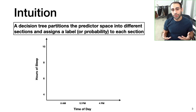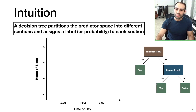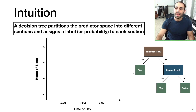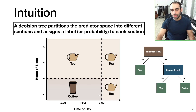Another way to think about decision trees is graphically, which I personally find much more intuitive. Here on the right we have the example from before, with time of day plotted on the x-axis and amount of sleep on the y-axis. Another way to represent what the decision tree is doing is by partitioning this predictor space — the space defined by our two predictor variables, time of day and hours of sleep — into different sections and assigning a label to each section. Splitting on 4 p.m. and 6 hours of sleep, we draw a line at 4 p.m. and another at 6 hours of sleep.